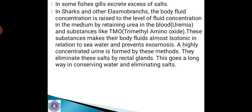In some fishes, gills excrete excess amounts of salts. In sharks and other elasmobranchs, the body fluid concentration is raised to the level of the surrounding medium by retaining urea in the blood — a condition called uremia — and substances like TMAO, that is trimethylamine oxide. These substances make their body fluids almost isotonic in relation to seawater and prevent exosmosis. A highly concentrated urine is formed, and salts are eliminated by rectal glands, which goes a long way in conserving water and eliminating salts.